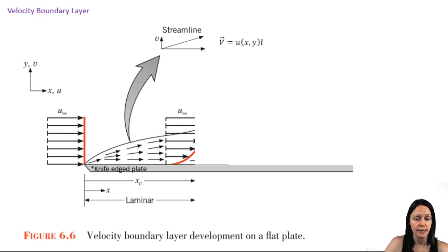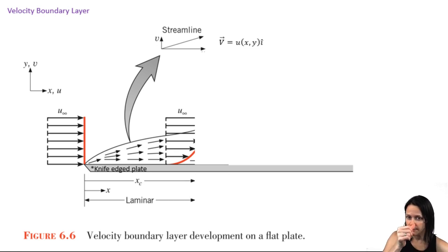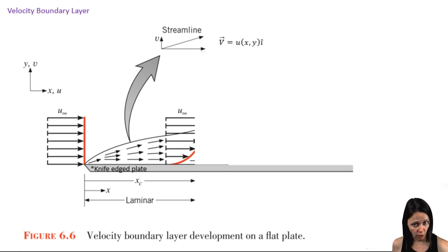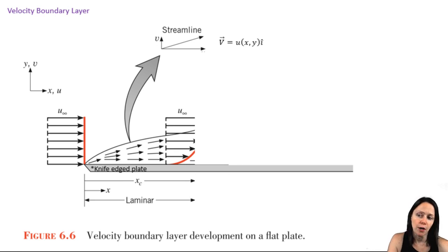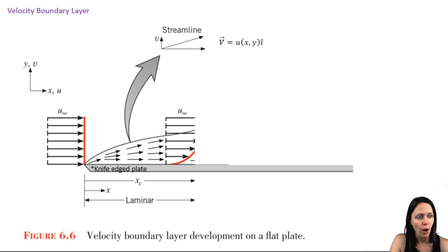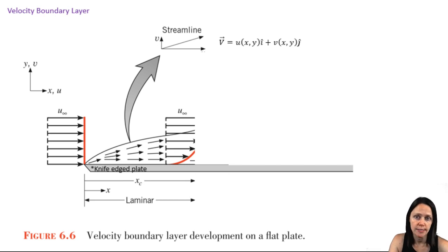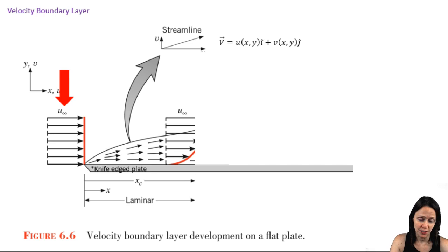So u is the velocity in the x-direction. You can see that this velocity is a function of where you are along the length of the plate, the x-coordinate. You can also see that it's a function of how far away from the plate you are, the y-coordinate. You also have a velocity within the y-direction, which we term little v, although its contribution is small compared to the velocity in the x-direction, u.